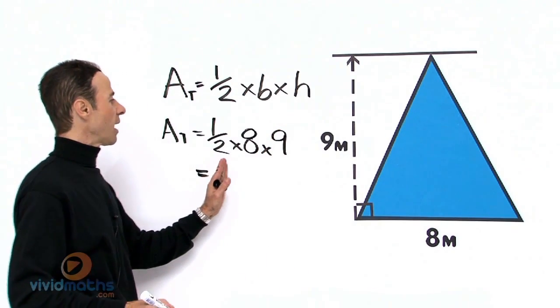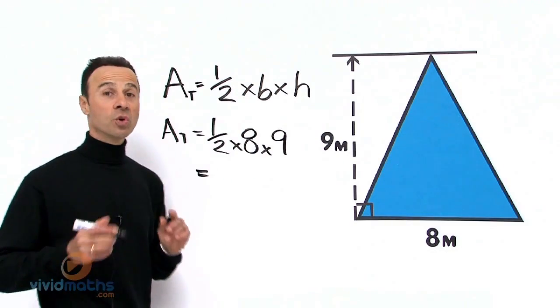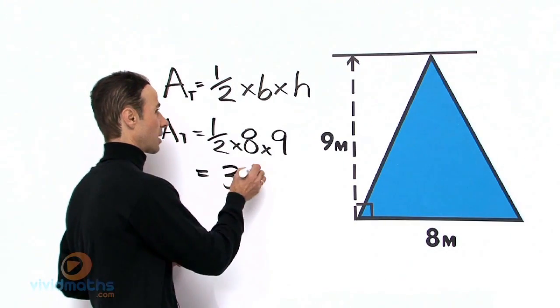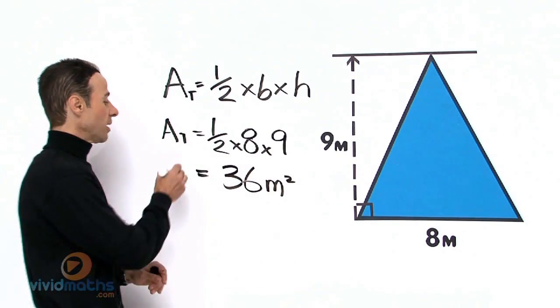So we work all that out. A half times 8 times 9 in your calculator will give you 36 meters squared because it is the area.